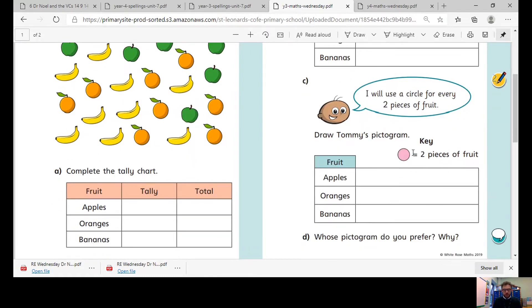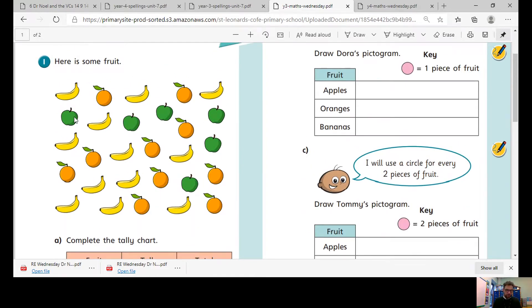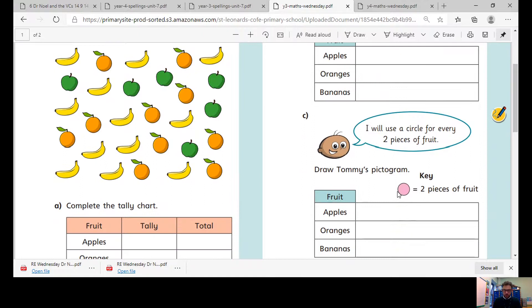So each circle's two pieces of fruit. So if we've got our apples, we count them up one, two, three, four, five, six. How many circles would we have to draw if each circle represents two? So we'd have three. One circle would be two, four, six, because each circle represents two pieces and there are six apples.